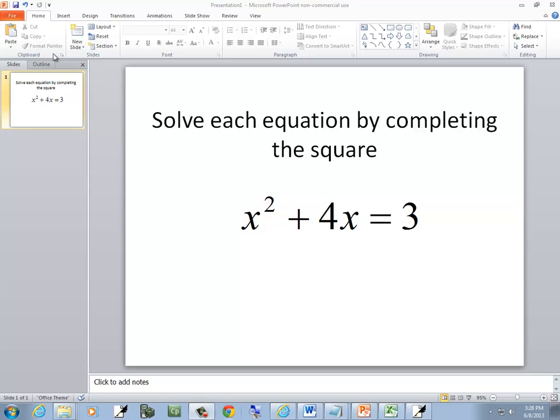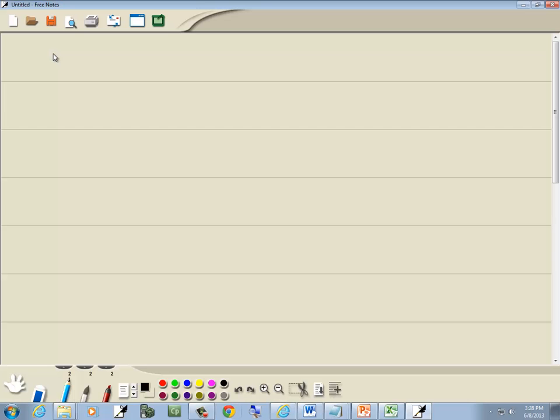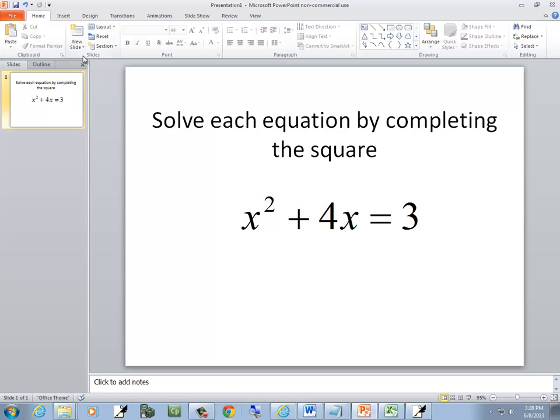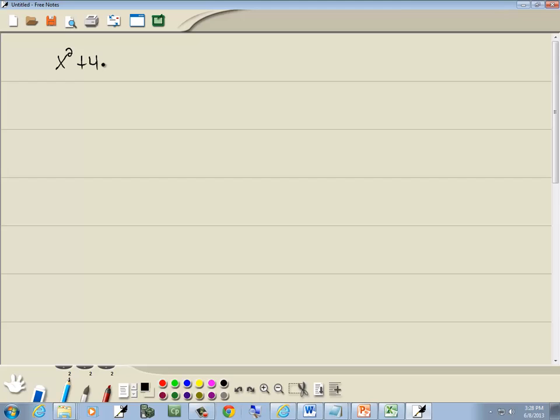We want to solve this equation by completing the square. So we got x squared plus 4x is equal to 3. Now step one, divide everything by the number in front of your x squared. Well, there is no number in front of your x squared. Step two, take the constant term to the right side, that's been done.